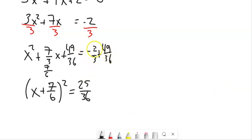So notice I combine those. You could have done that by finding the common denominator, which is 36. So I'll multiply this by 12. So that would be negative 24 36ths plus 49 36ths. That's where that 25 came from.